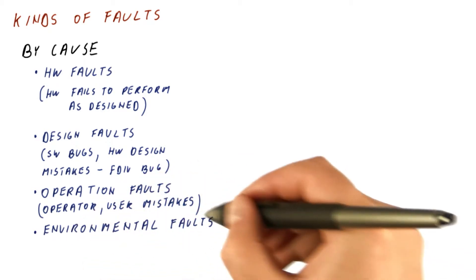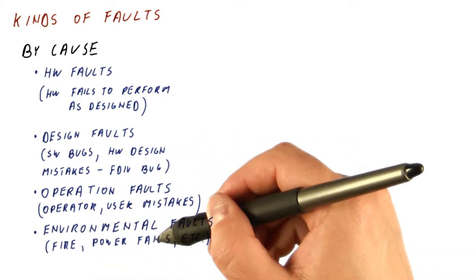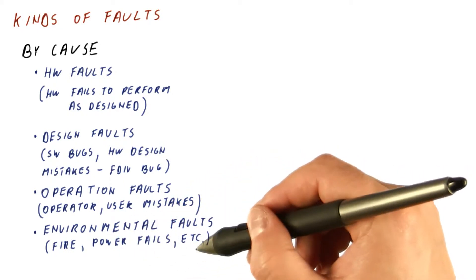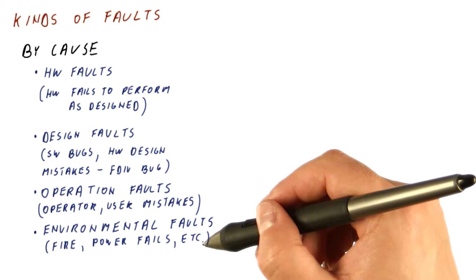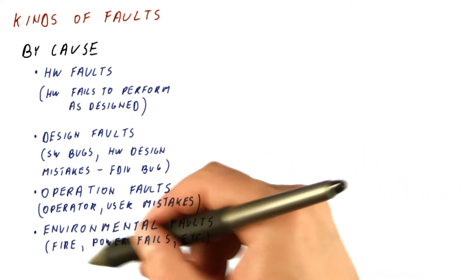And then we can have environmental faults, such as fire that burns down the system, power failure, sabotage of the system, all things that in the environment may cause the system to have an error or not perform the service.